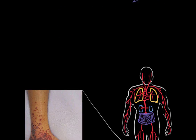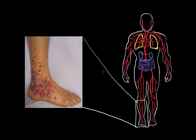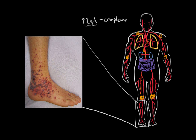In Henoch-Schönlein purpura, we have an elevated IgA, which is actually one blood test you can use to look for the disease, because elevated IgA is not normally found in the blood. Immune complexes formed in the blood travel to joints and can cause joint pain known as arthralgias — this can happen in the elbows, shoulders, or anywhere there's a joint. These IgA immune complexes also deposit in the kidney, causing kidney damage and bloody urine known as hematuria.